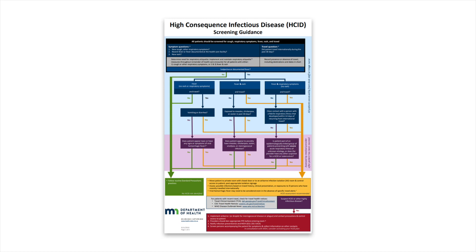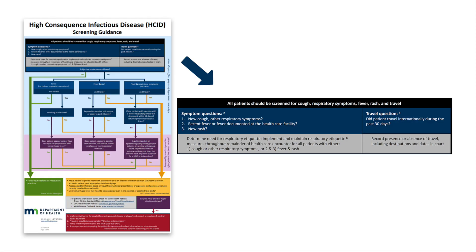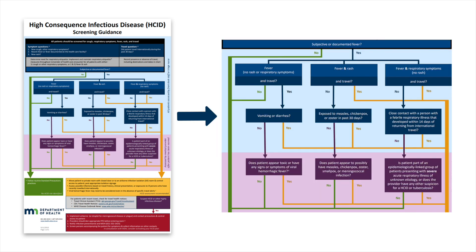For the high consequence infectious disease screening guidance, the receptionist asks Seth about travel and rash. The HCID screening guidance screens all patients for four things: cough or respiratory symptoms, fever, rash, and travel outside of the country in the last 30 days. If the patient answers yes to any of these four questions, follow the screening guidance for next steps.